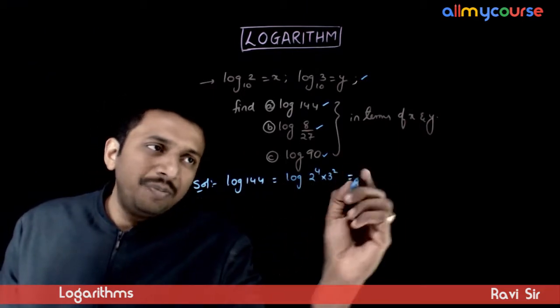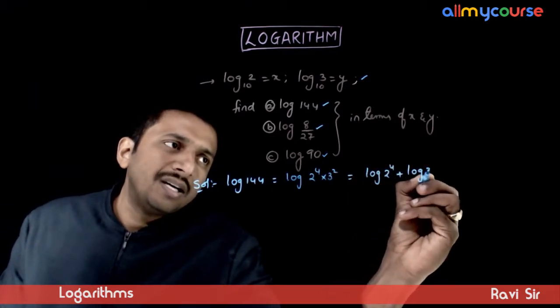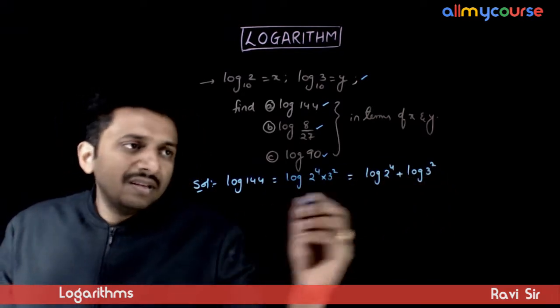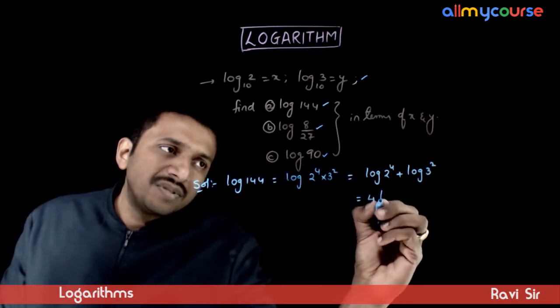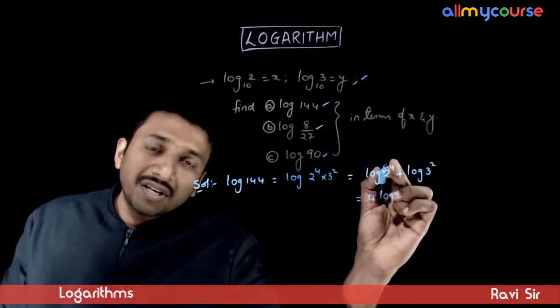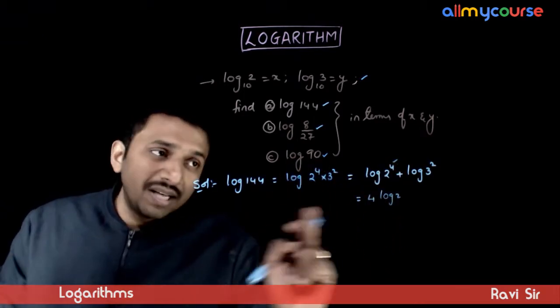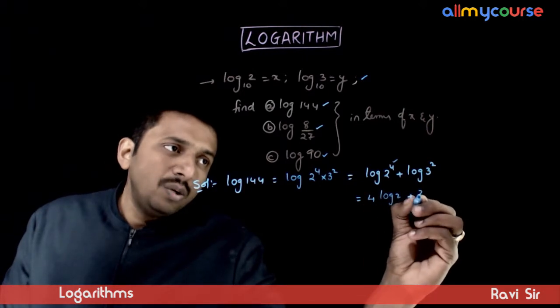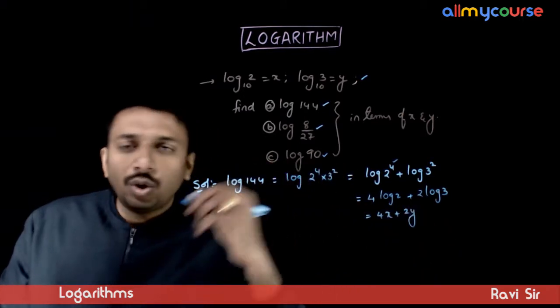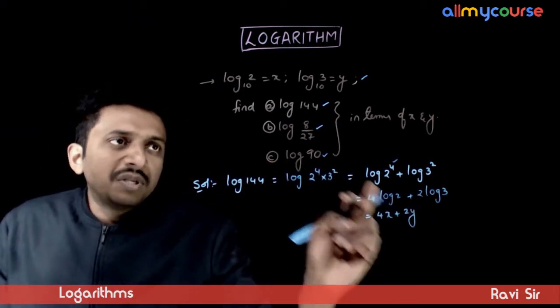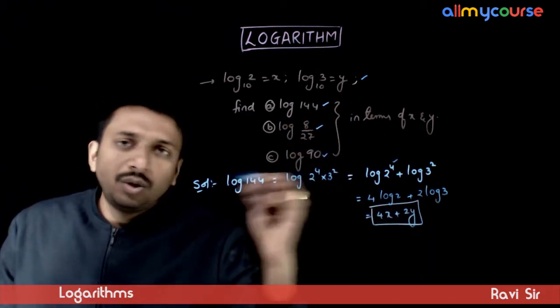Log a into b can be written as log 2 power 4 plus log 3 square. That is equal to 4 times log 2, because we have seen that in the power rule, the power of the argument comes out as a multiple, plus 2 times log 3. That is equal to 4x plus 2y. 4 times log 2 plus 2 times log 3. 4x plus 2y.